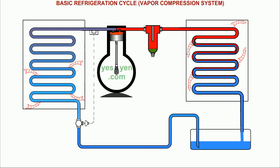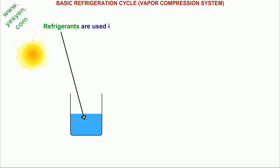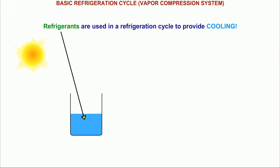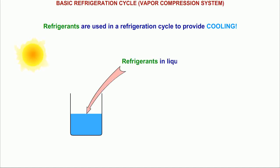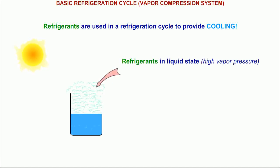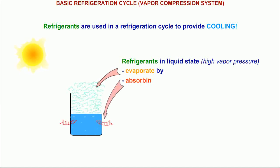Basic Refrigeration Cycle — Vapor Compression System. Refrigerants are used in a refrigeration cycle to provide cooling. Refrigerants in liquid state evaporate by absorbing heat from the atmosphere,